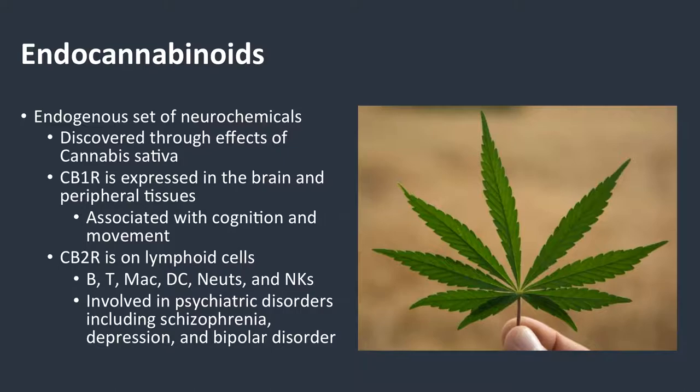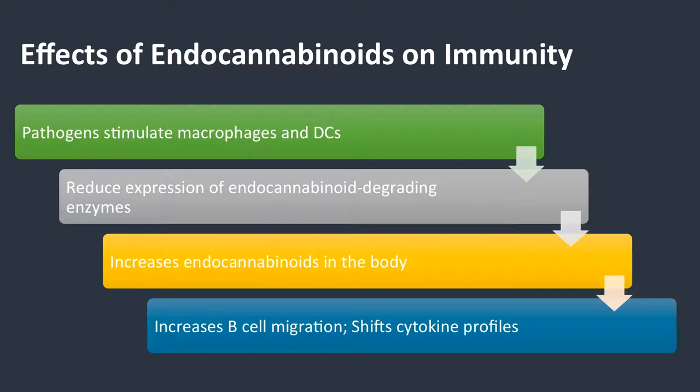We also see that endocannabinoids with receptor 2 are involved in psychiatric disorders. When people say they have marijuana-induced psychosis, it's real — there is a psychosis that can be induced by endocannabinoids. When pathogens stimulate macrophages and dendritic cells, there's a reduction of endocannabinoid-degrading enzymes, which increases endocannabinoids, and that increases B cell migration and shifts cytokine profiles.